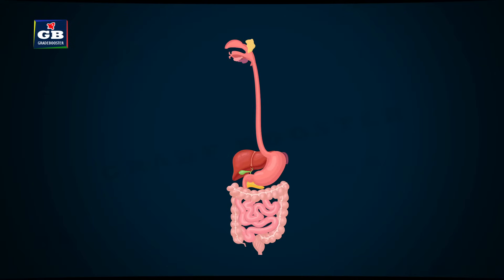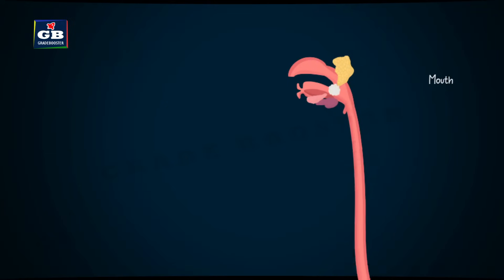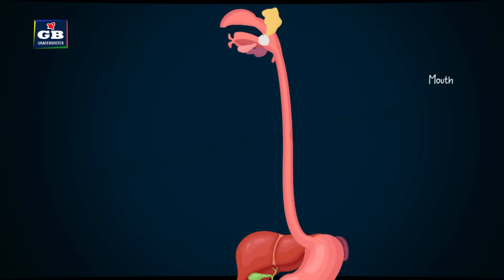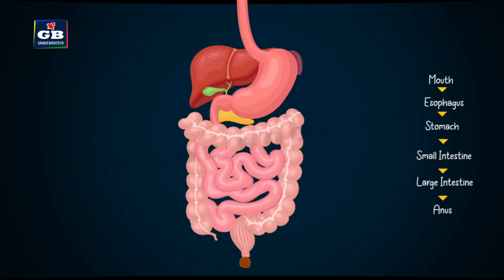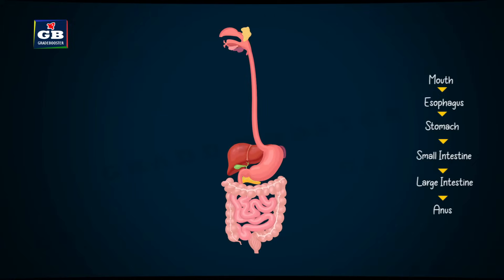The food enters the digestive system through the mouth and then it passes down into the stomach through the esophagus. From the stomach, it passes to the small intestine, from there to the large intestine, and the undigested food is finally excreted through the anus. This is the flow of food in our digestive system.